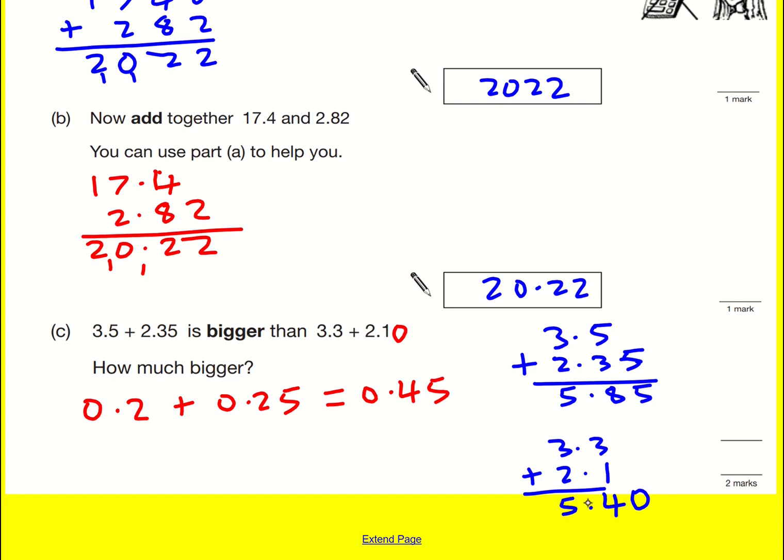Again, it's what we add on to 5.4 to get to 5.85. You could do a subtraction, but I hope you're happy that this is the answer.